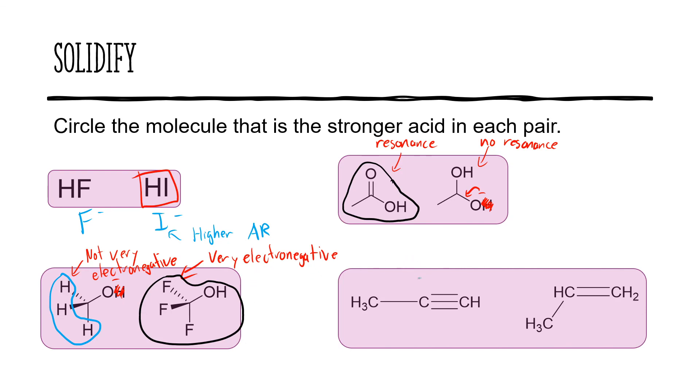And then finally, we have an orbital type example. We have an sp orbital versus an sp2 orbital. Between those, our sp is 50% s compared to our sp2, which is 33% s. And what that means is our 50% s is going to be the stronger acid.